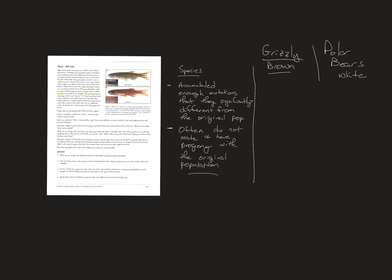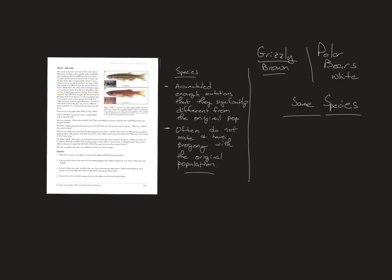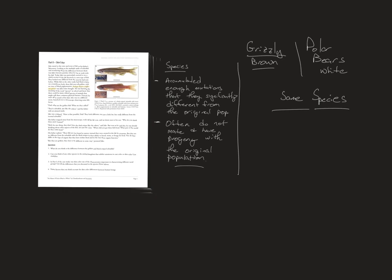Because of global climate change, polar bears have had to leave their arctic environment and come down into the tundra, where they've met grizzly bears and mated with them. Now there are hybrids. The question is: are they the same species? Science has a problem even in defining a species, let alone race. Race has no real distinguishing factors — we can talk about gene pools and populations, but race isn't something you can really measure.